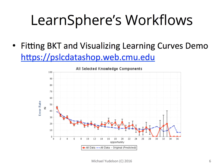We will look at how BKT models are fit in LearnSphere's workflows, and we'll visualize the fits using LearnCurves. A LearnCurve plots an average error rate on the y-axis against the number of attempts to apply a skill on the x-axis. Naturally, we want the error rate to go down. The red line shows the error rate computed from the data, and the blue line shows the error rate as predicted by the model. It is desirable for the blue line to closely track the red line.